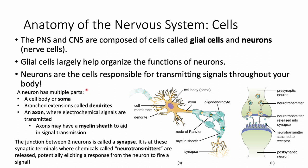A neuron has many parts: a soma or cell body where the nucleus is located, branched extensions called dendrites that attach and communicate with other neurons, and a long axon where the electrochemical signal is transmitted to another neuron. The axon can be coated in a myelin sheath, which helps signal transmission occur more effectively.